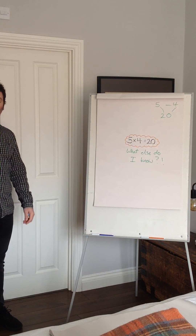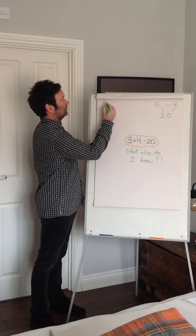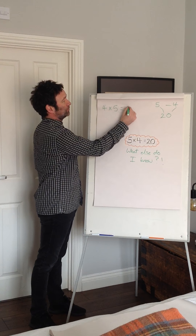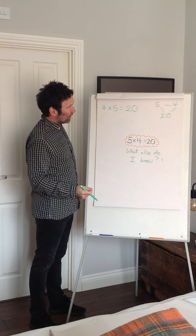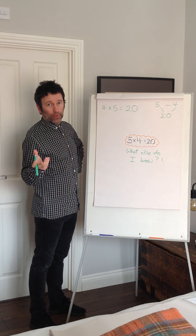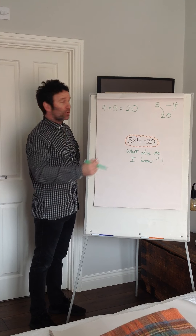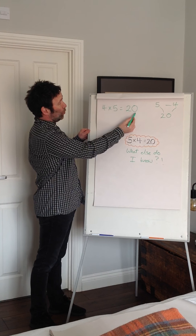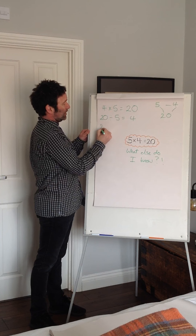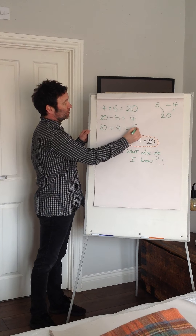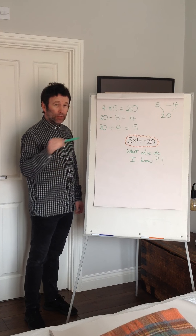Hopefully most of you will recognize pretty quickly that if I know this I should also know this. This is one of the related facts, and from that we look at what we call the inverse — the relationship to the inverse — which basically means that multiplication and division are very much linked. We're going to start to draw out this kind of meaning. A really good question to ask children is: what's the same about all of these, and what's different?